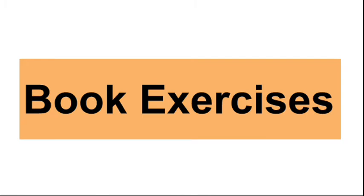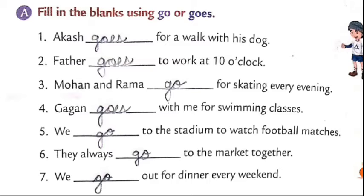Let us see the book exercises. Open page number 60 and see the first exercise — exercise A: fill in the blanks using go or goes. The first one: Akash dash for a walk with his dog. Since Akash is a singular noun, there is only one person, so we use goes. Number three: Mohan and Drama — that is a plural noun, so we use go.